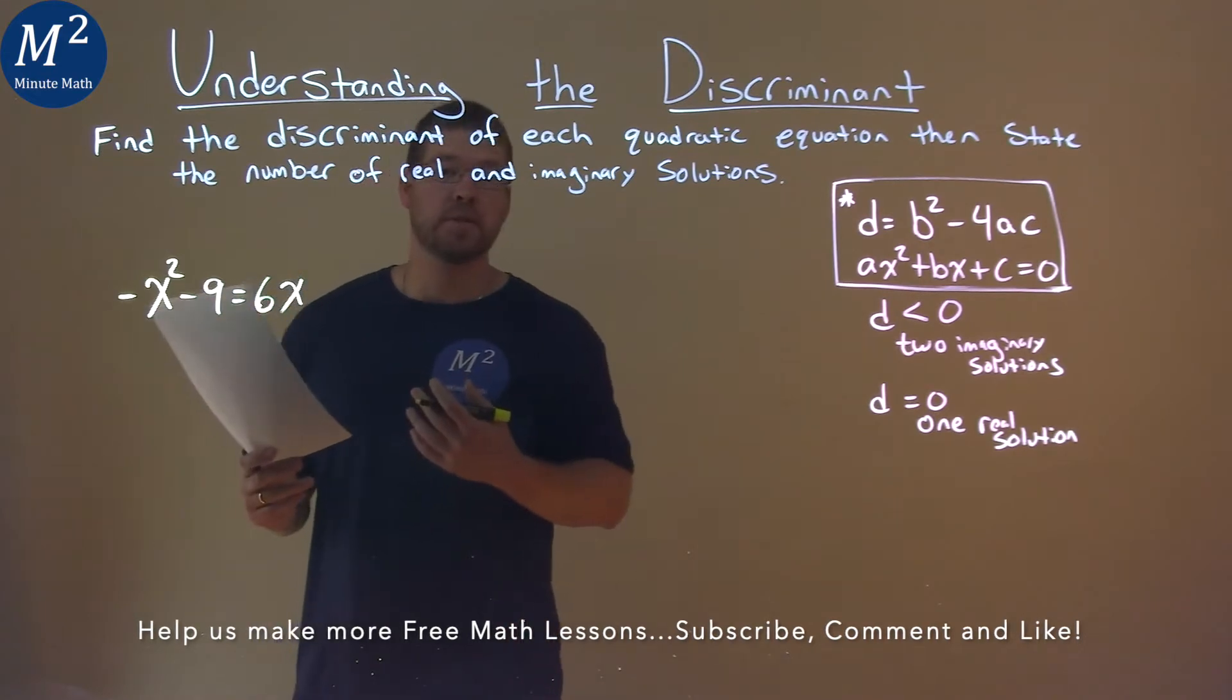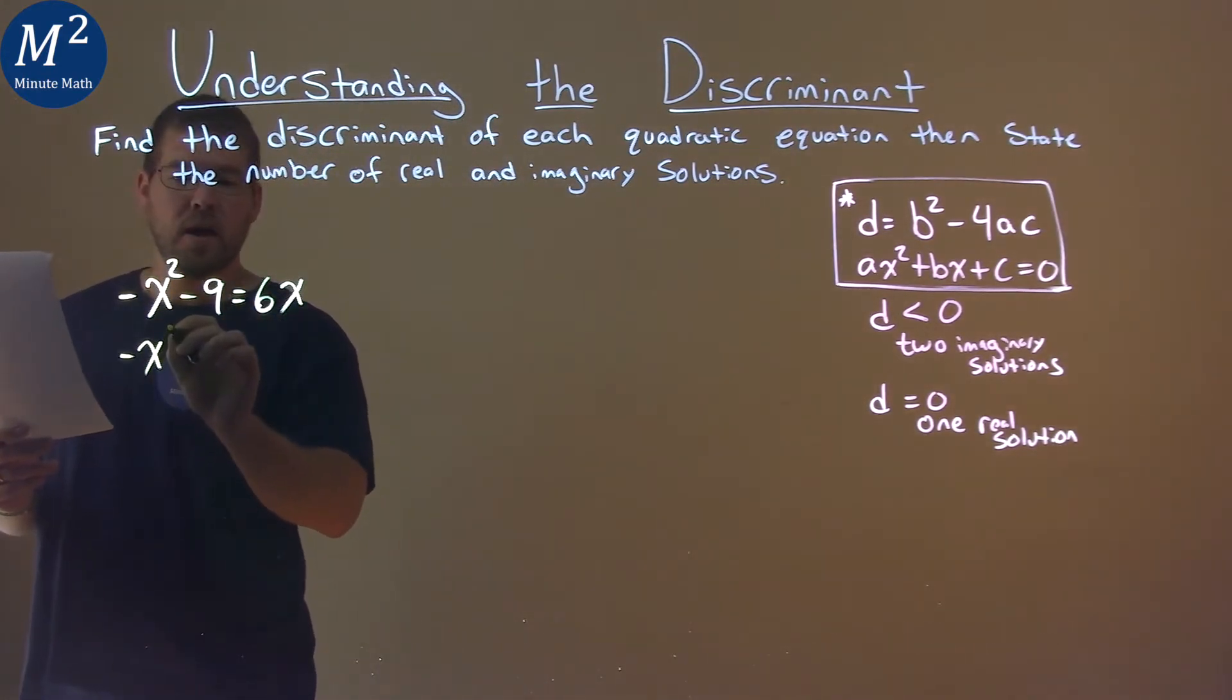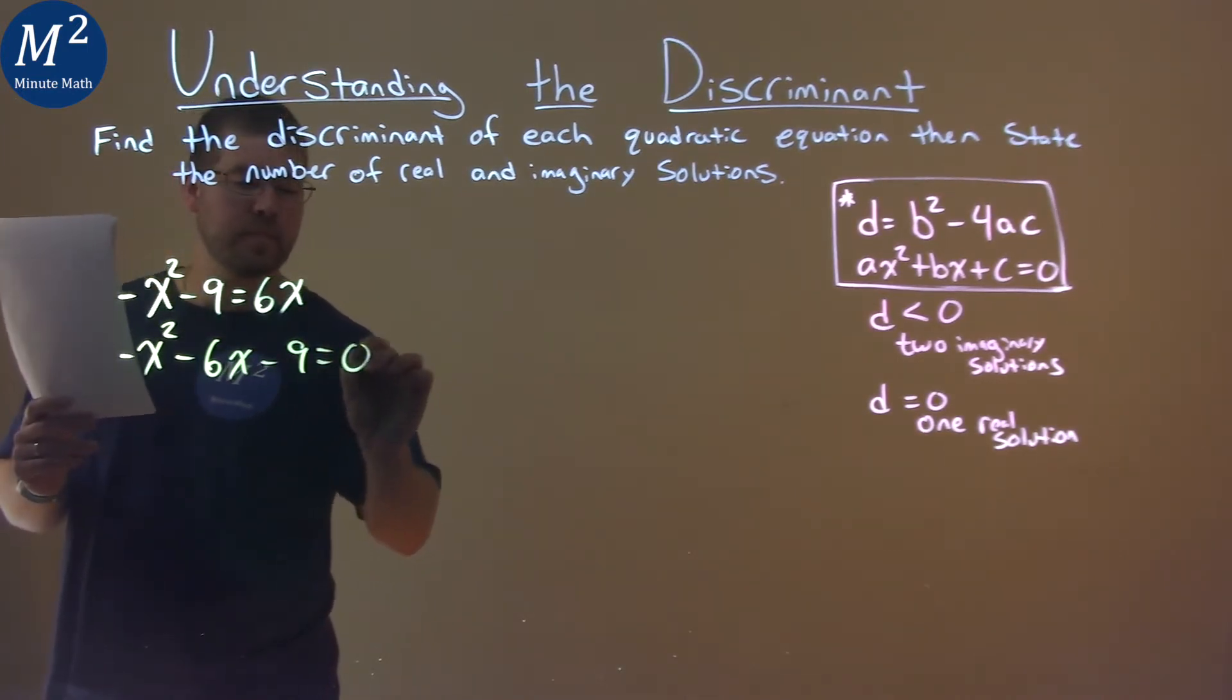First thing is we want this equation equal to 0. So let's subtract the 6x to both sides, and we have negative x squared minus 6x minus 9 equals 0.